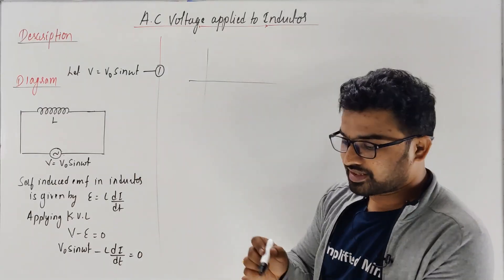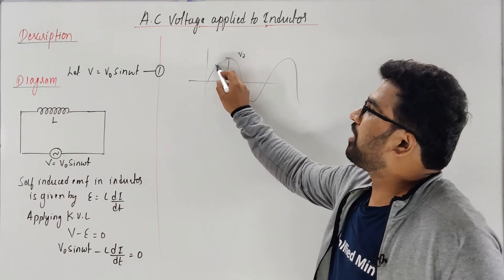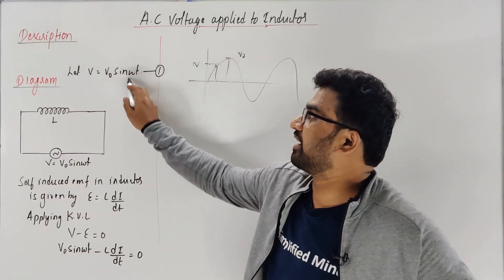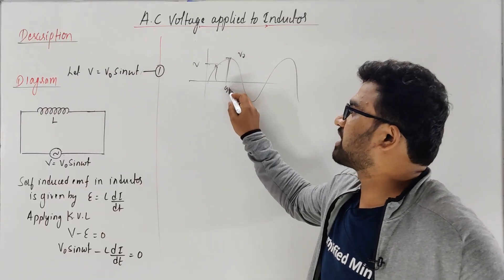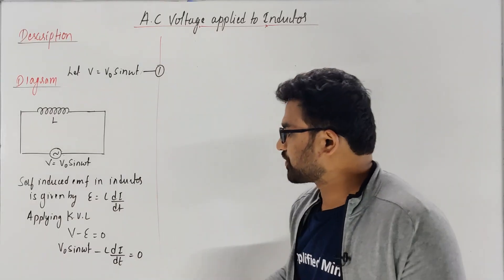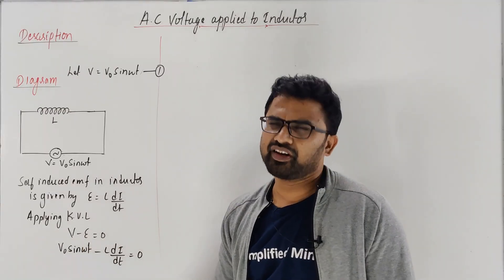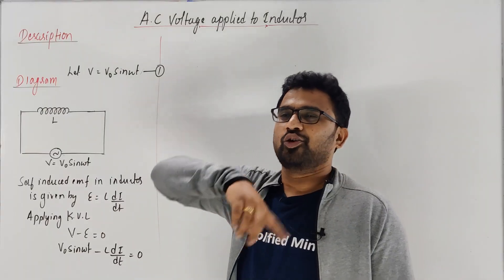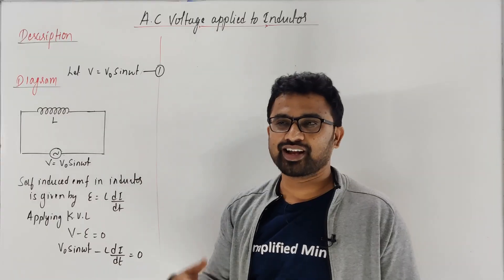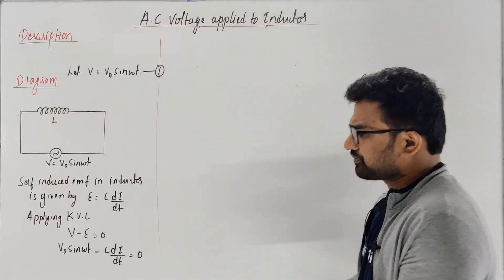At any time t, V is the instantaneous voltage, and V₀ is the peak voltage. So at 90 degrees the voltage is maximum and equals V₀. So the expression is V = V₀ sin(ωt). Now applying KVL and substituting: V₀ sin(ωt) − L × dI/dt = 0. Whenever there is rotation, we can convert into trigonometry — sine — and angular velocity omega into t gives us ω, so: L × dI/dt = V₀ sin(ωt).